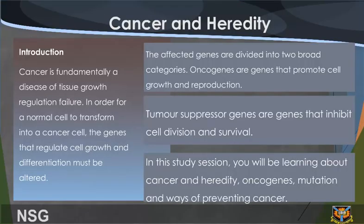Cancer is fundamentally a disease of tissue growth regulation failure. In order for a normal cell to transform into a cancer cell, the genes that regulate cell growth and differentiation must be altered. The affected genes are divided into two broad categories.